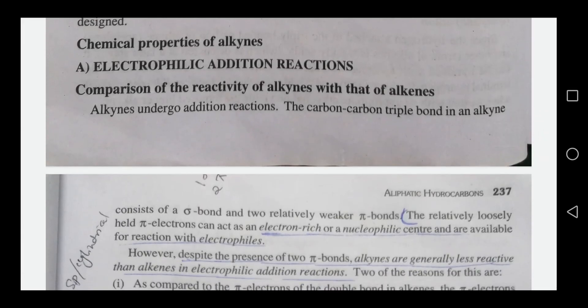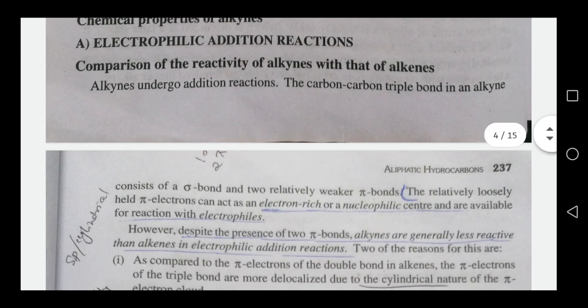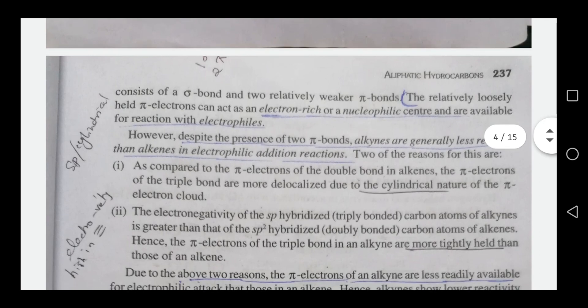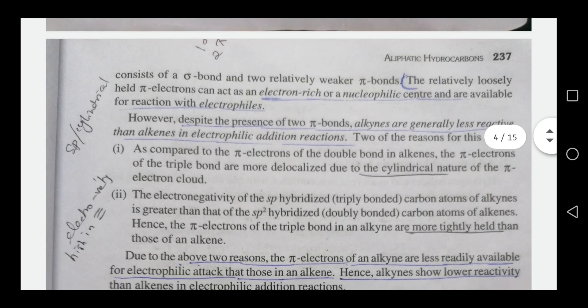Today we are going to discuss the chemical properties of alkynes. First one: electrophilic addition reaction, then comparison of reactivity of alkynes with that of alkenes. The carbon-carbon triple bond in alkynes consists of one sigma bond and two relatively weaker pi bonds. The relatively loosely held pi electrons can act as an electron-rich or nucleophilic center and are available for reaction with electrophiles.